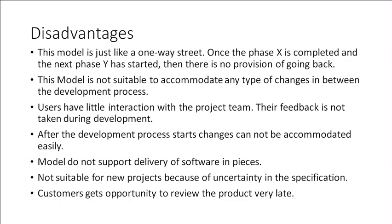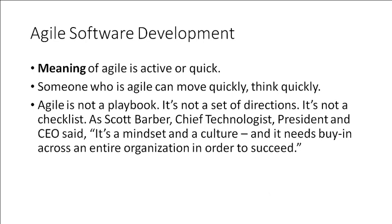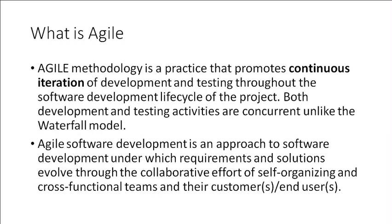Due to these disadvantages, we need to shift from traditional models to the new model known as agile software development. The industry is moving towards agile software development. The meaning of agile is active or quick — someone who is agile can move quickly, think quickly, and easily adopt changes. Agile methodology is a practice that promotes continuous iteration of development and testing throughout the software development lifecycle.